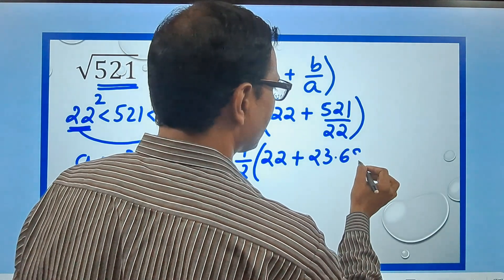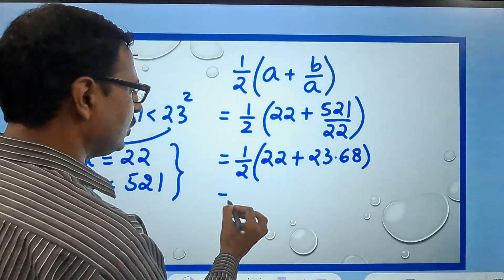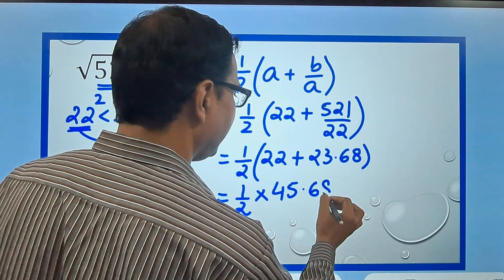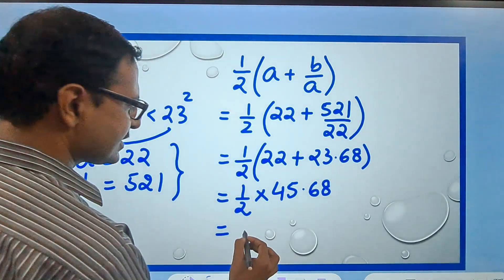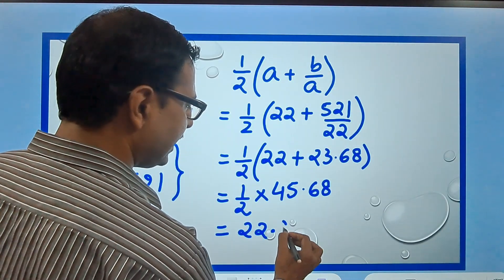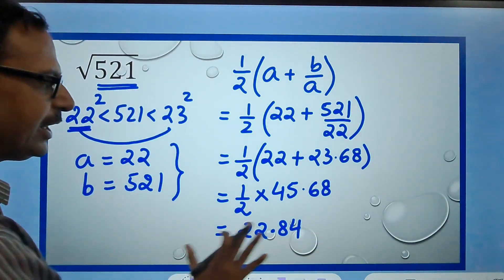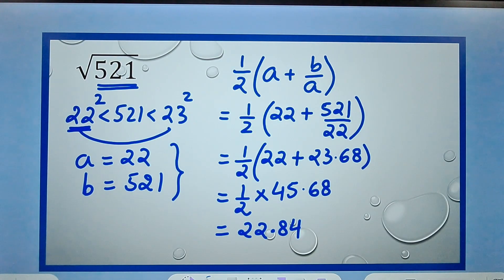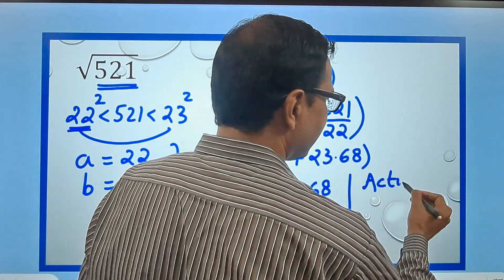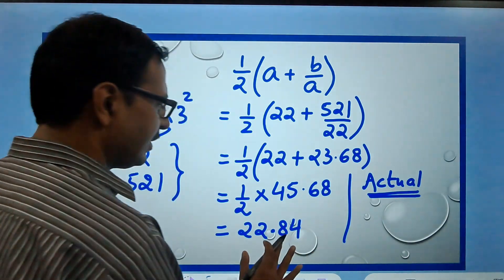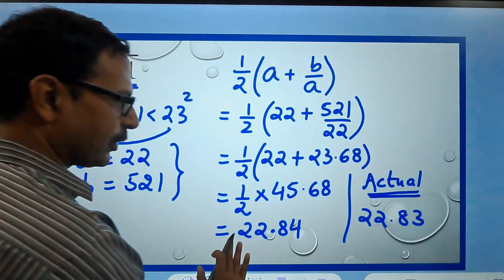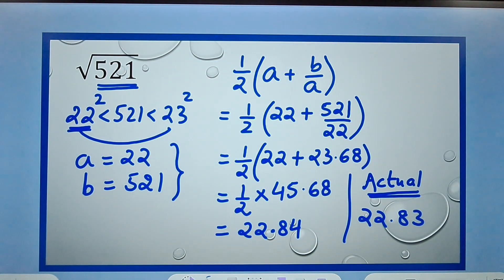If you add the numbers in the bracket, this will be half of 45.68, and half of 45.68 will be 22.84. Now if you pick up the calculators and check the actual answer, the actual answer rounded off up to two decimal places will be 22.83, not 84.